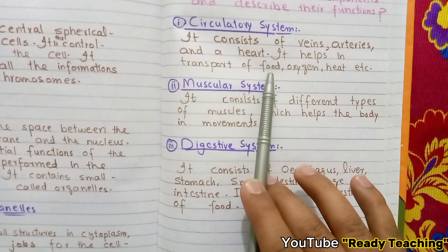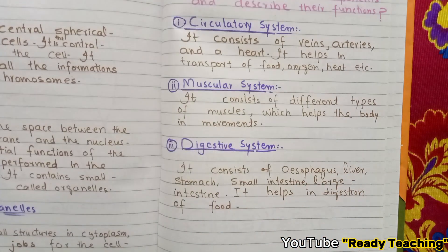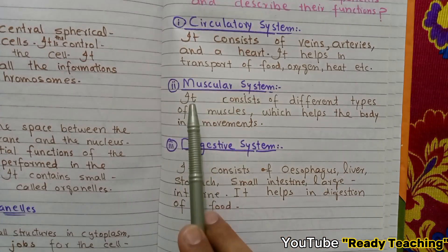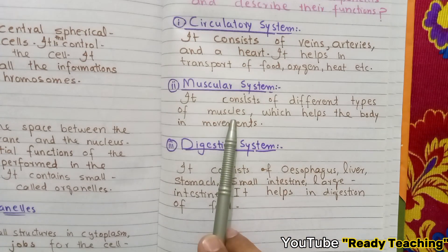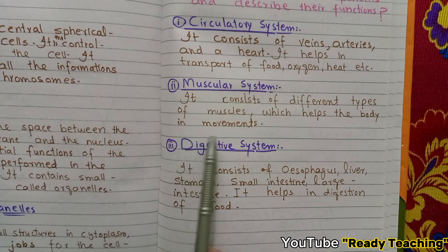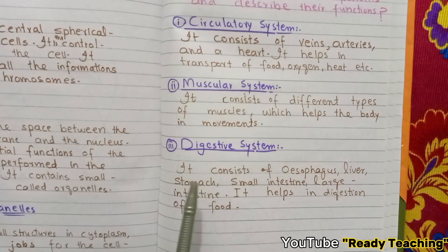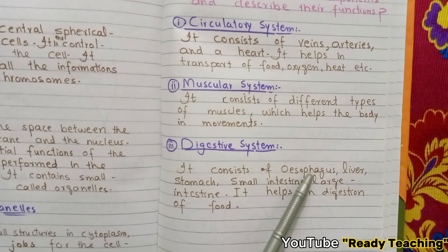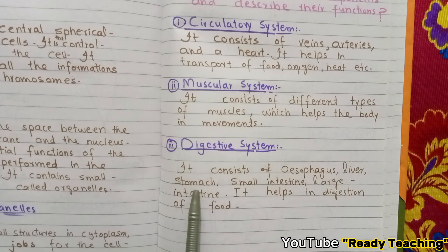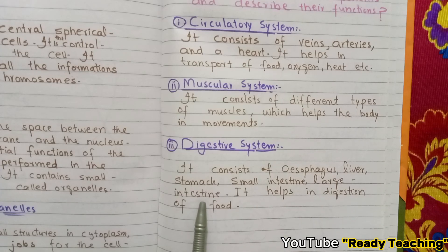The muscular system consists of different types of muscles and is responsible for body movements. The digestive system consists of esophagus, liver, stomach, small intestine, and large intestine — it digests food.